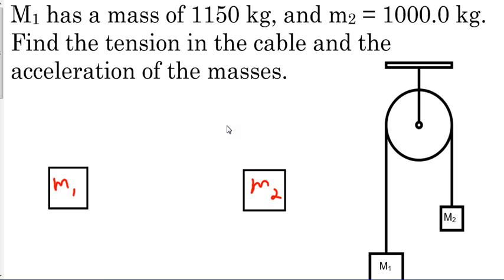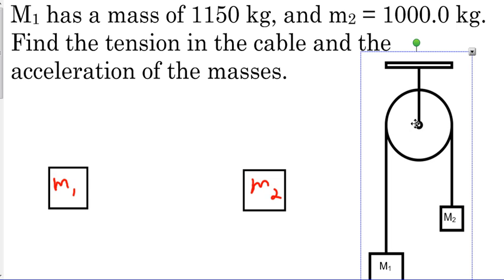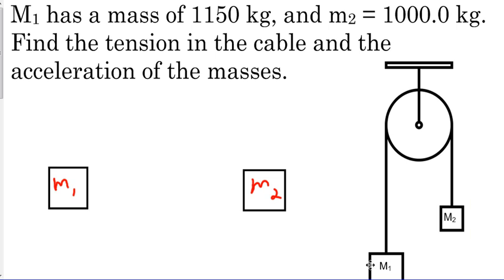For this video we're going to be looking at two things. The first is setting a frame of reference with our free body diagrams, and the second thing is friction. We're going to start by using this Atwood machine, which will help us with two masses connected by a cable over a pulley.